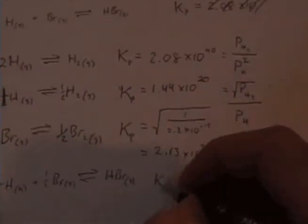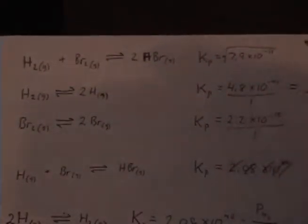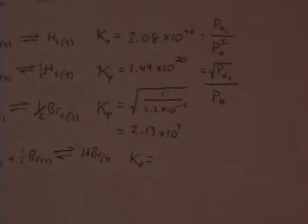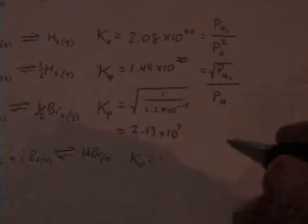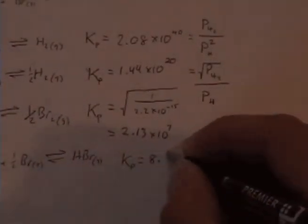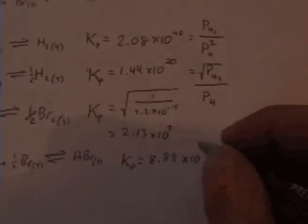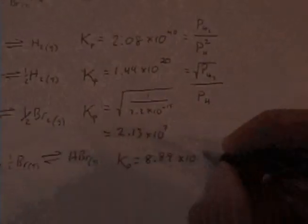So my Kp for this equation is just going to be simply the square root of this value. So that will be the square root of 7.9 times 10 to the minus 11th. And that gives me 8.89 times 10 to the minus 6th.